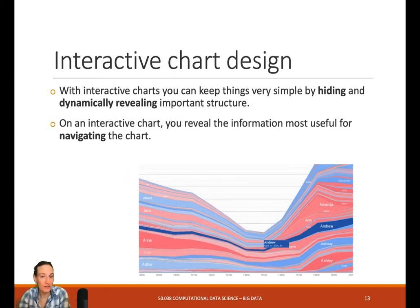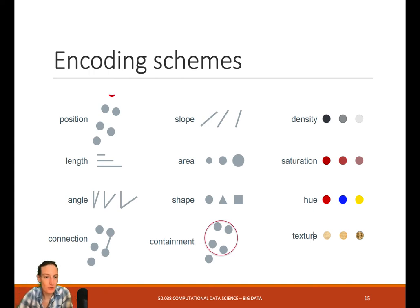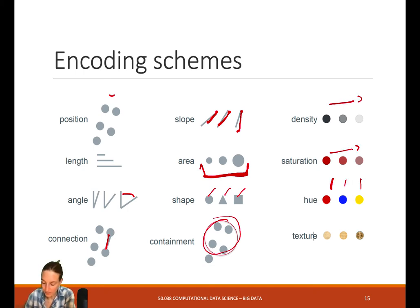We talked about this - dynamically reveal some structure or features can really help you to reduce the clutter in your graph but still keep all the information in there. We have some encoding schemes that we can use as well. In my graph, I can use things like the position to show elements. We can use the length of lines, the angle in pie charts, connected elements or not, change the width, the area, the size, the volume, the shape for categorical data, or contain them in groups. Then we also have color schemes - density, saturation, the hue, or use different textures.